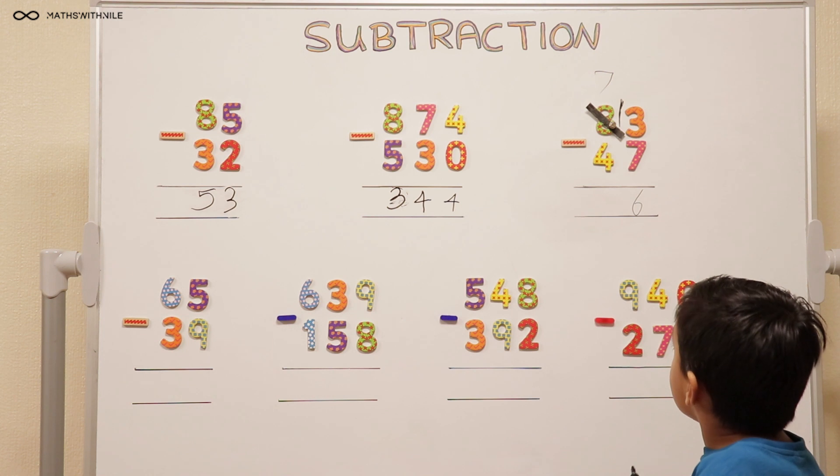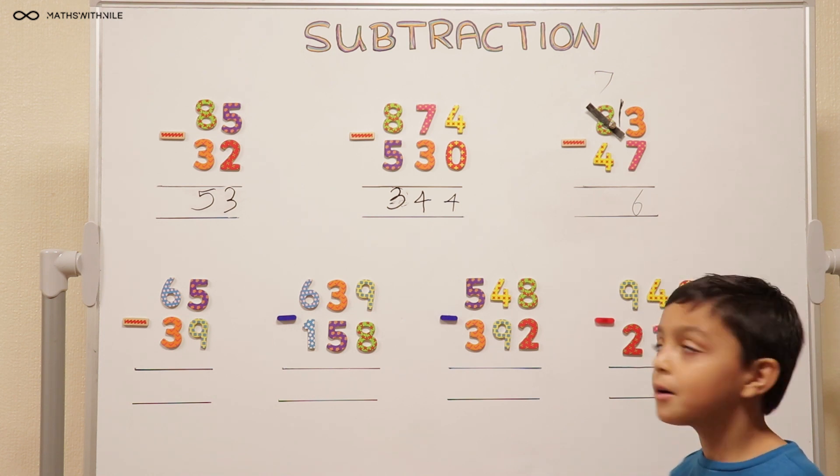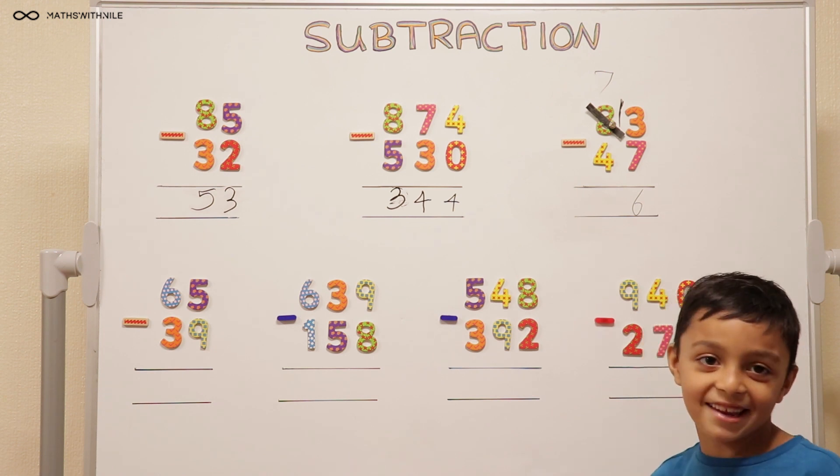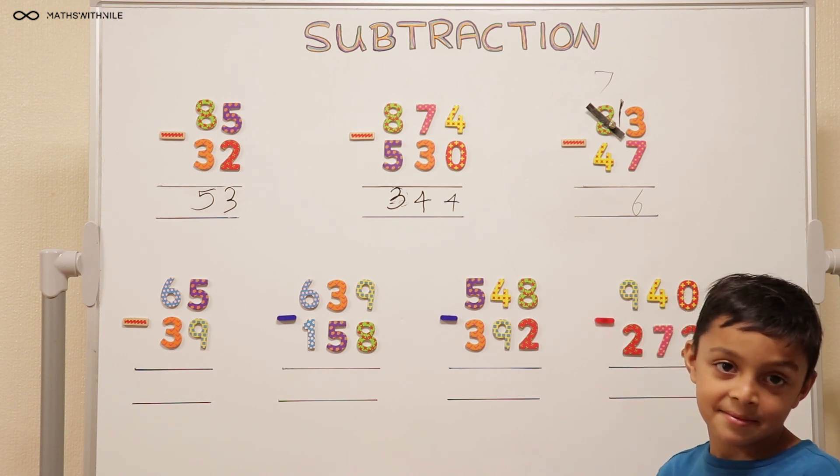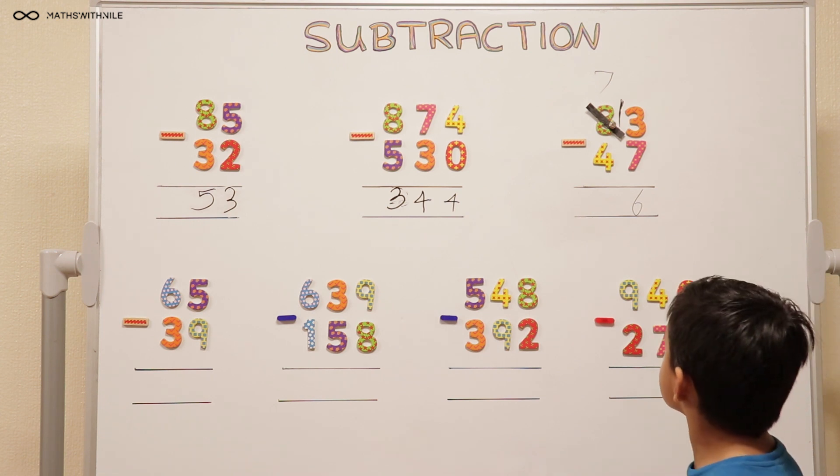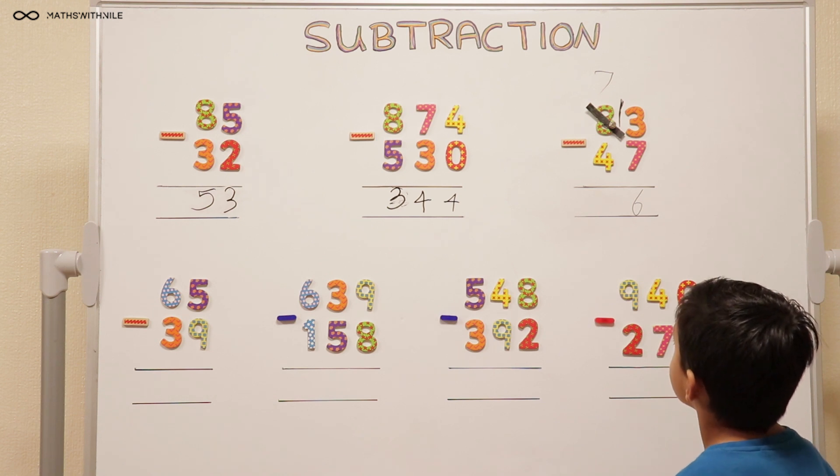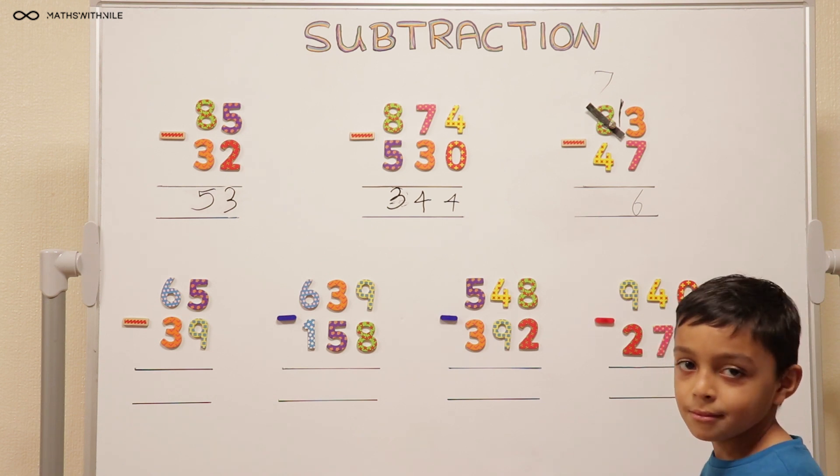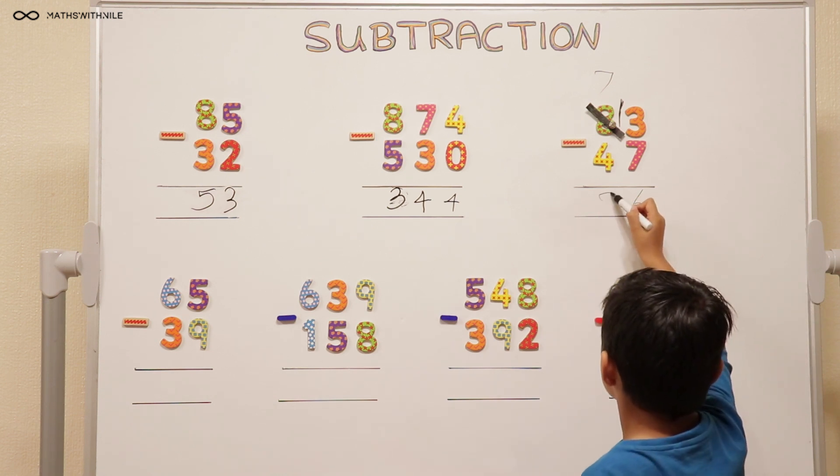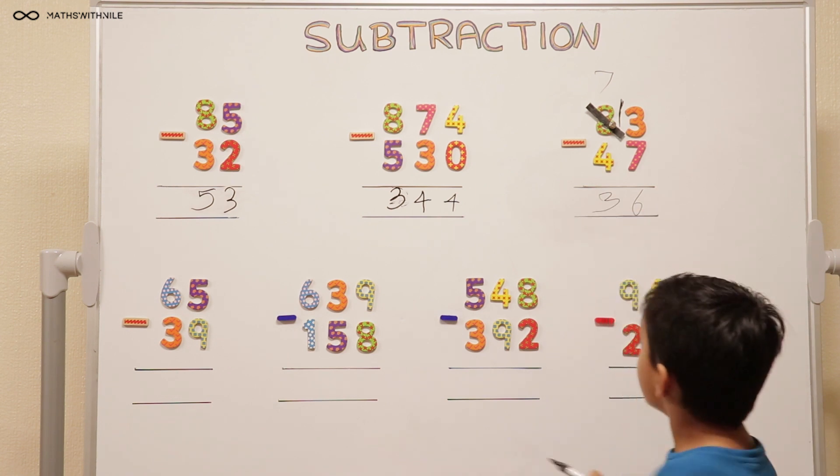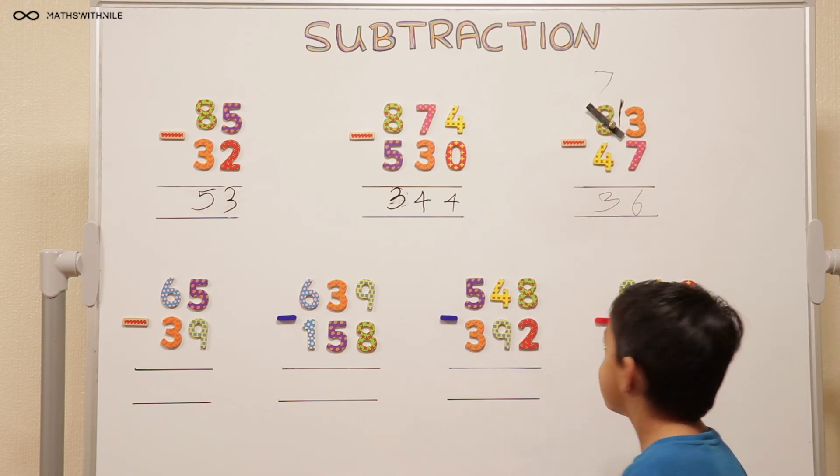And then? 8 take away 4 equals 4. Is it 8 though? No, 7 take away 4. Yes, it was 8 but then we had to take 1 and we have 7. So what's 7 take away 4? 7 take away 4 is 3. Very good. So the answer is 36.